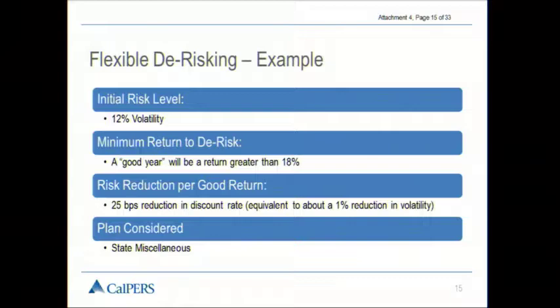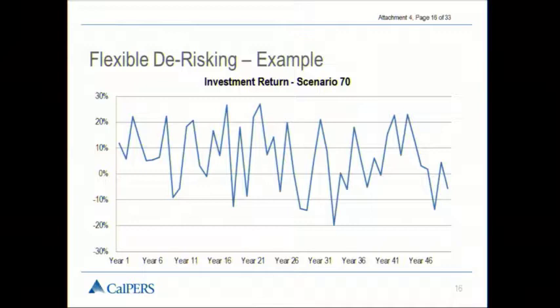We assumed that we would always do a 25 basis point reduction in the discount rate, getting something between 75 basis points and 100 basis points — between 0.75% and 1% reduction in the contribution volatility. This particular plan that we're looking at is the state miscellaneous plan. Each plan will be slightly different. So this is the investment return that this particular scenario generated. This is what a 12% standard deviation on investment returns produces.